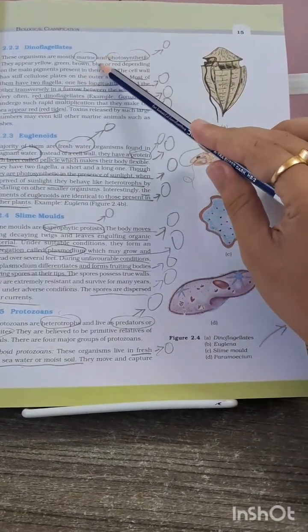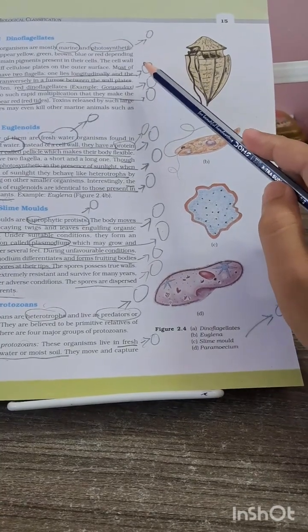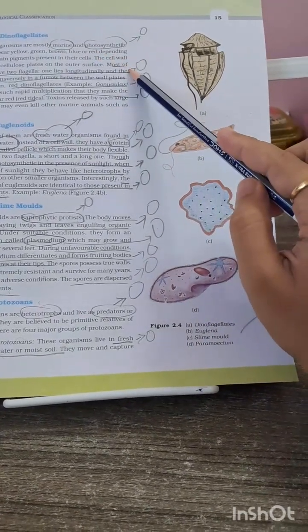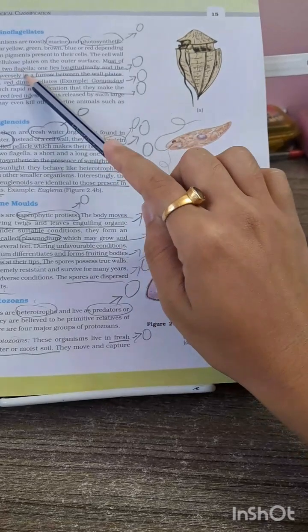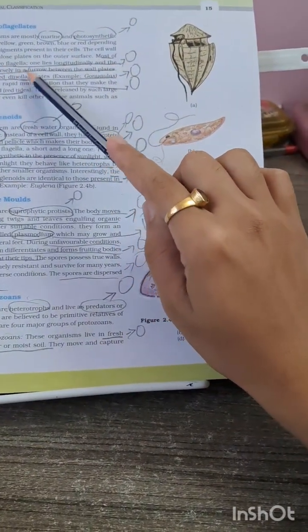The next important MCQ from this space, I think from dinoflagellates, is that most of them have two flagella and one lies longitudinally and the other lies transversely in a furrow between the wall plates.